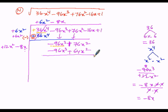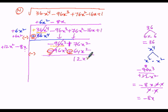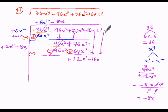As in ordinary division, we subtract now. To subtract we change all the signs of the second expression: minus becomes plus, plus becomes minus. Then minus 96x cubed plus 96x cubed get cancelled. Plus of minus is minus, so from 76x squared we subtract 64x squared: 76 minus 64 is 12x squared. The next two terms to copy down are minus 16x and plus 1.